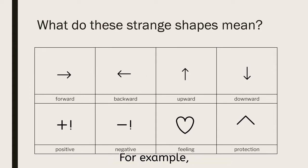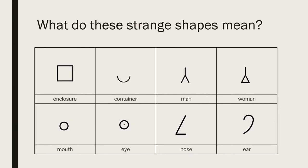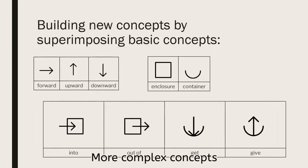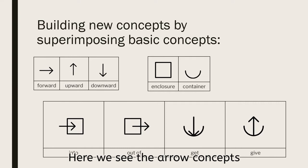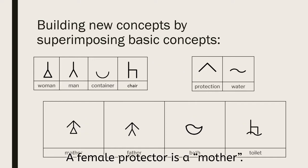For example, the roof-shaped symbol represents protection. More complex concepts build on these simpler concepts. Here are more simple shapes for simple concepts. More complex concepts can be constructed from the simpler concepts by overlaying one on the other. Here we see the arrow concepts overlaid on the enclosure and container concepts to convey new concepts like into, out of, get, and give. A female protector is a mother. A similar and consistent process is used for father. A container with water is a bath. A chair over water is a toilet.